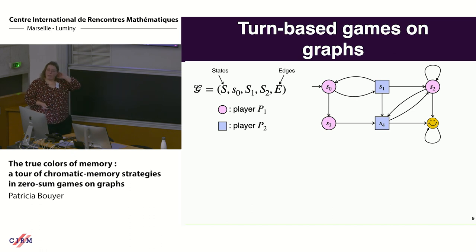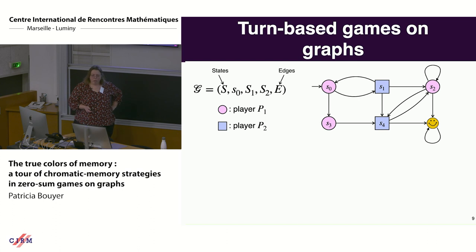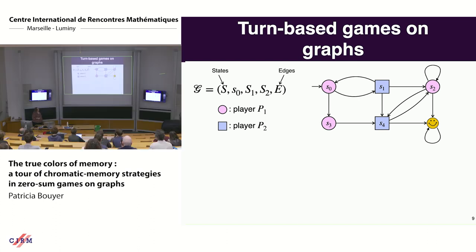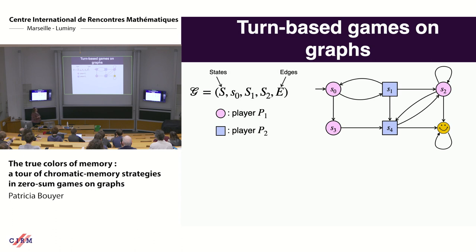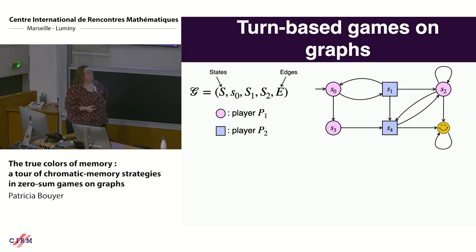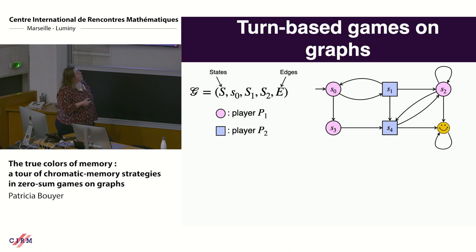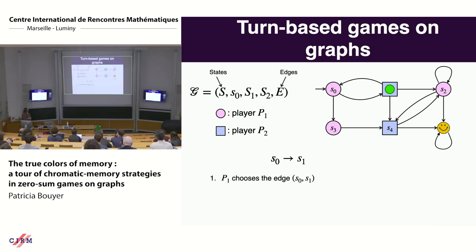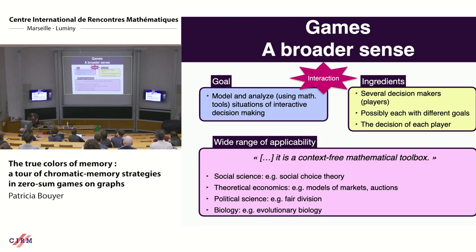Here is the basic model: a turn-based game on a graph. It's a finite graph where nodes have two types—pink nodes belong to player 1 and blue nodes belong to player 2. There is a set of edges between the states. We start from the initial state S0 with a token.